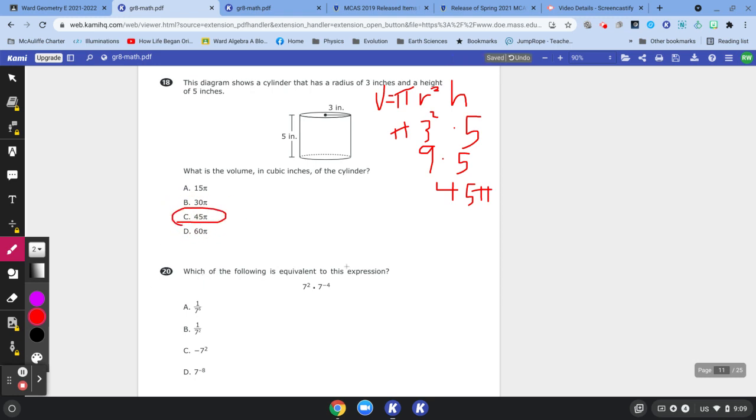Which of the following is equivalent to this expression? 7 squared times 7 to the negative 4. We have the same base in both cases.